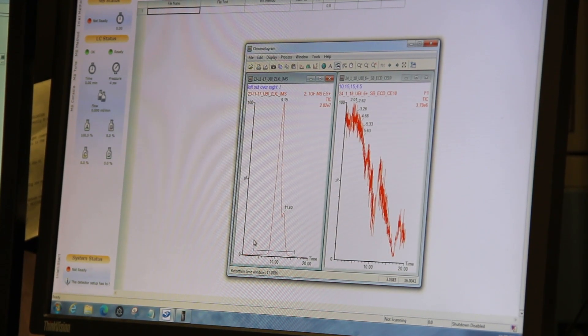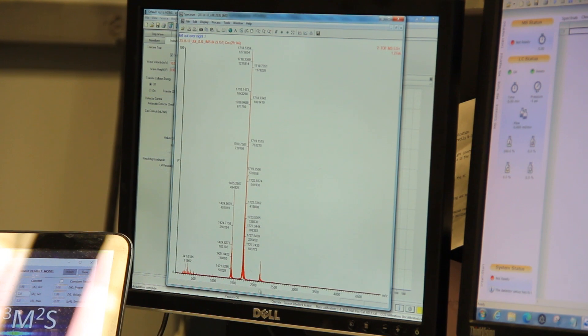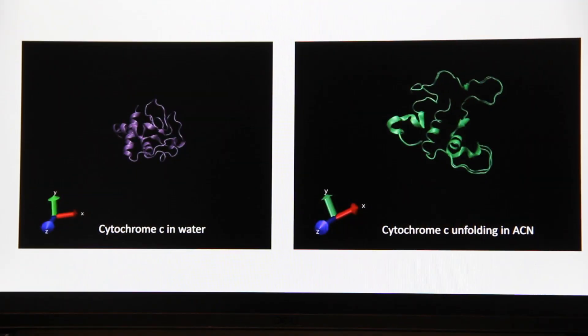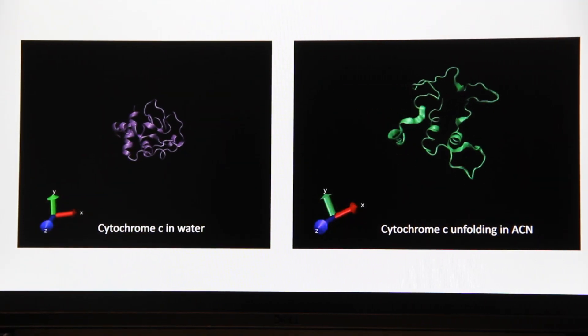My favorite stuff is the molecular modeling. I feel like a hacker. I'll go in, write my code, and then it'll spit out all the data. I have this movie of the protein I'm working on, cytochrome C—it'll unfold in the movie. So it's really cool to say, hey, I made that.